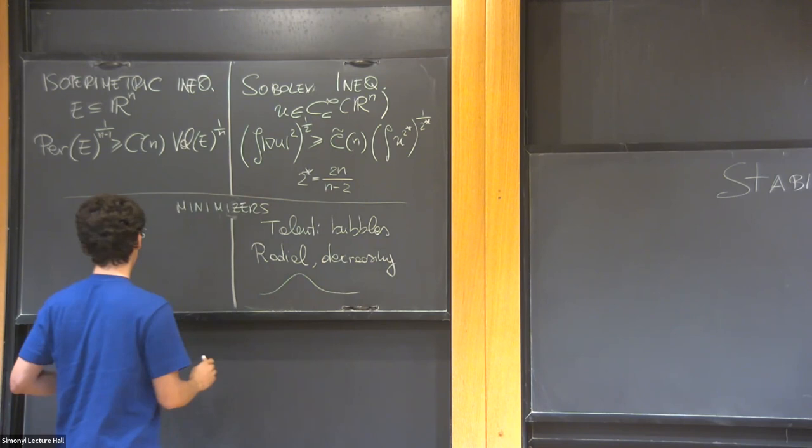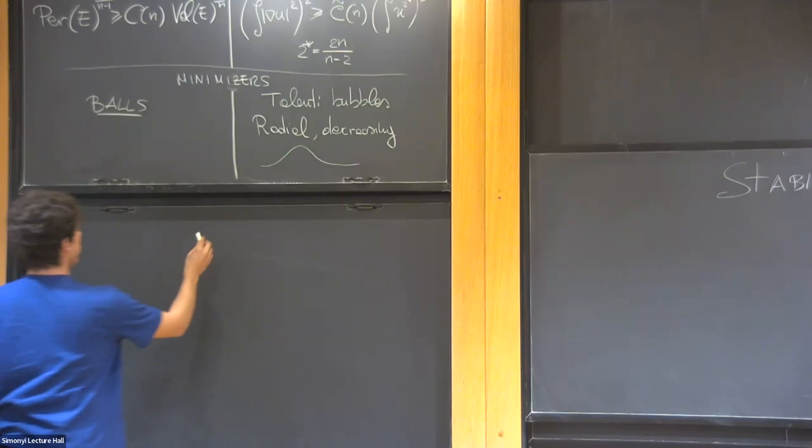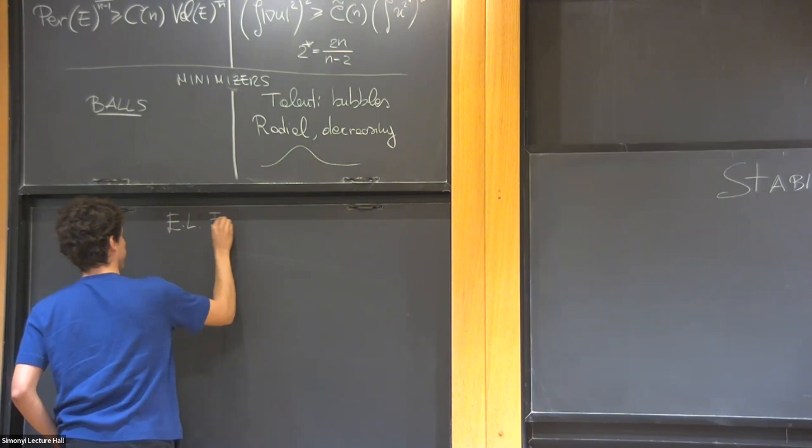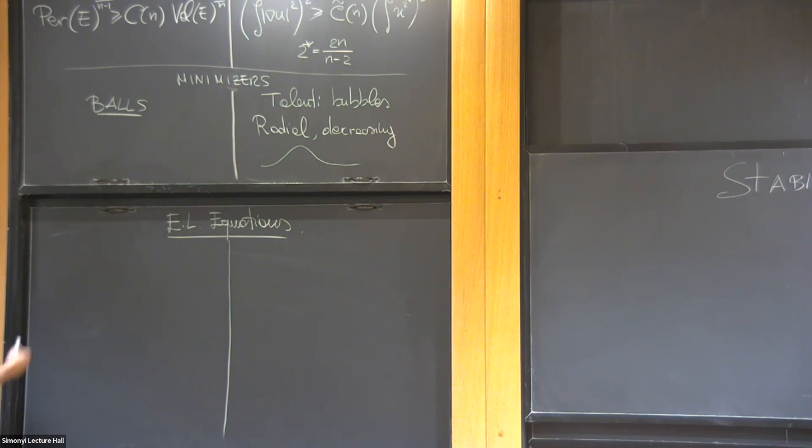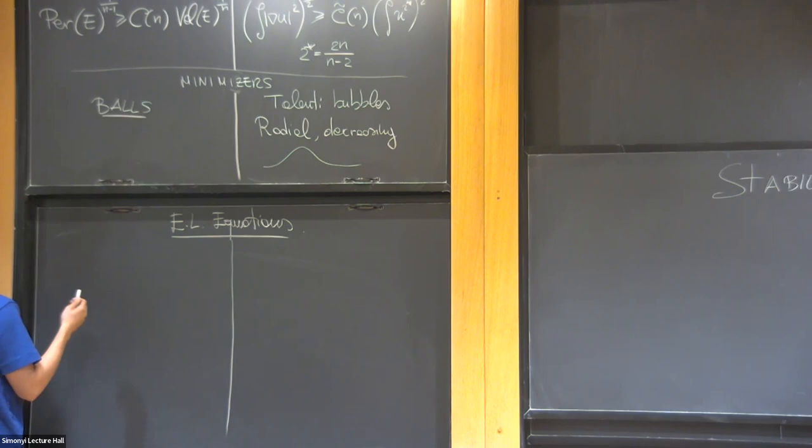Okay, then there's one last thing that I want to recall about both inequalities, which are the Euler-Lagrange equations associated. So you have two inequalities, you can easily associate a functional to inequalities, because moving everything on the same side.